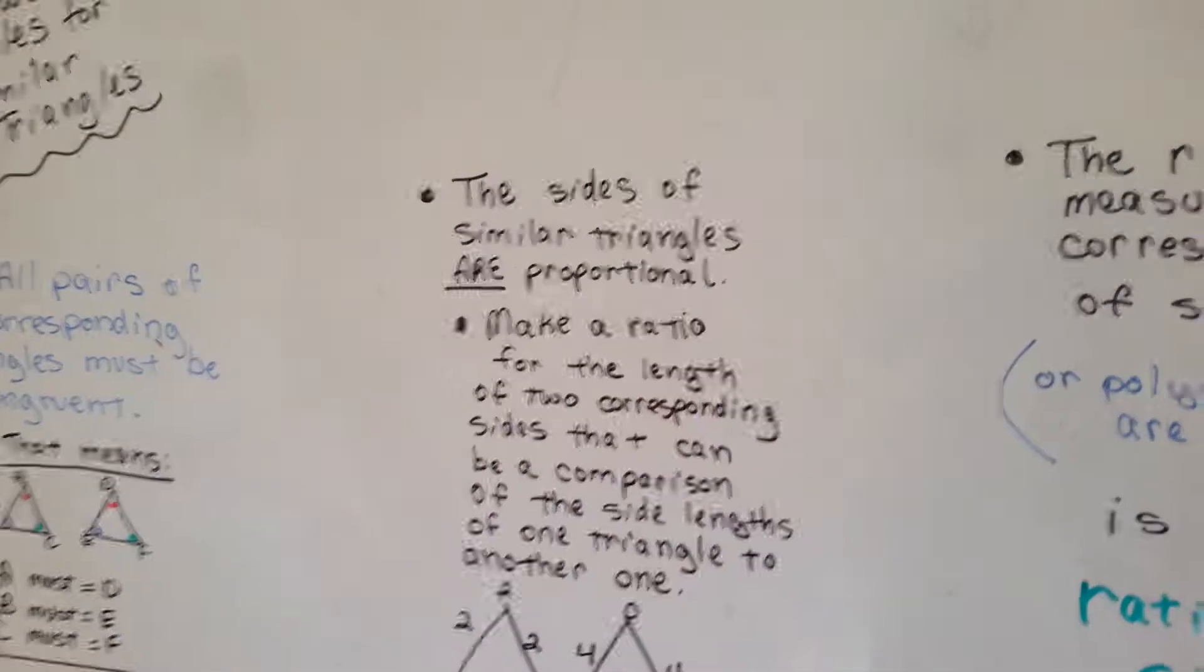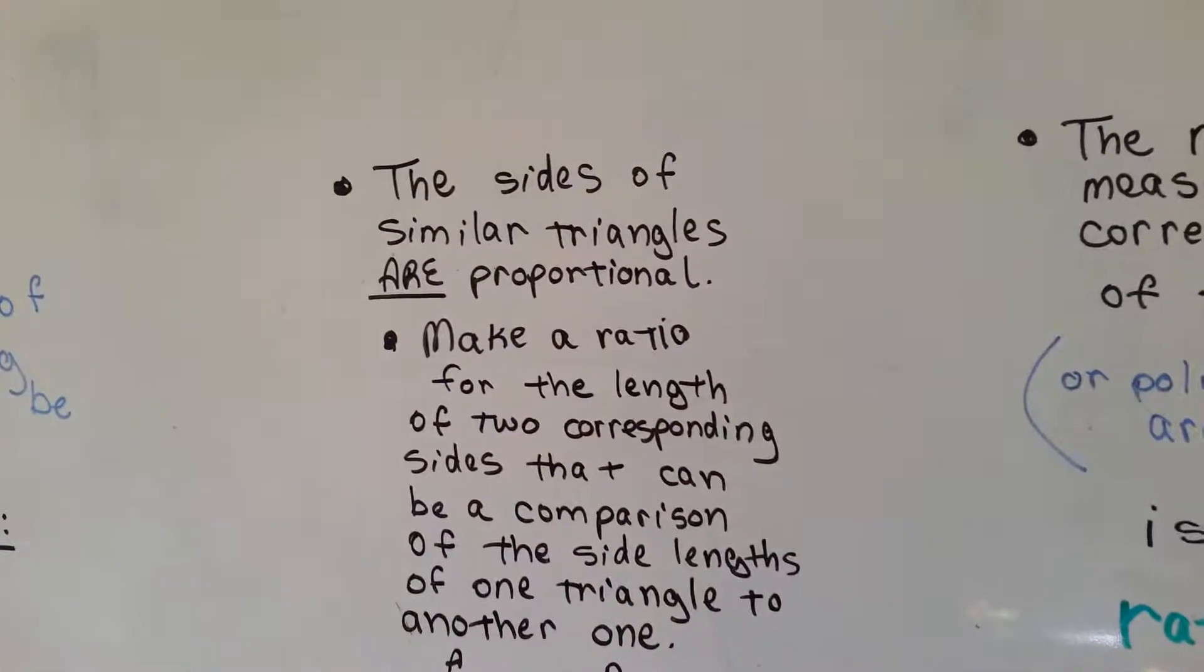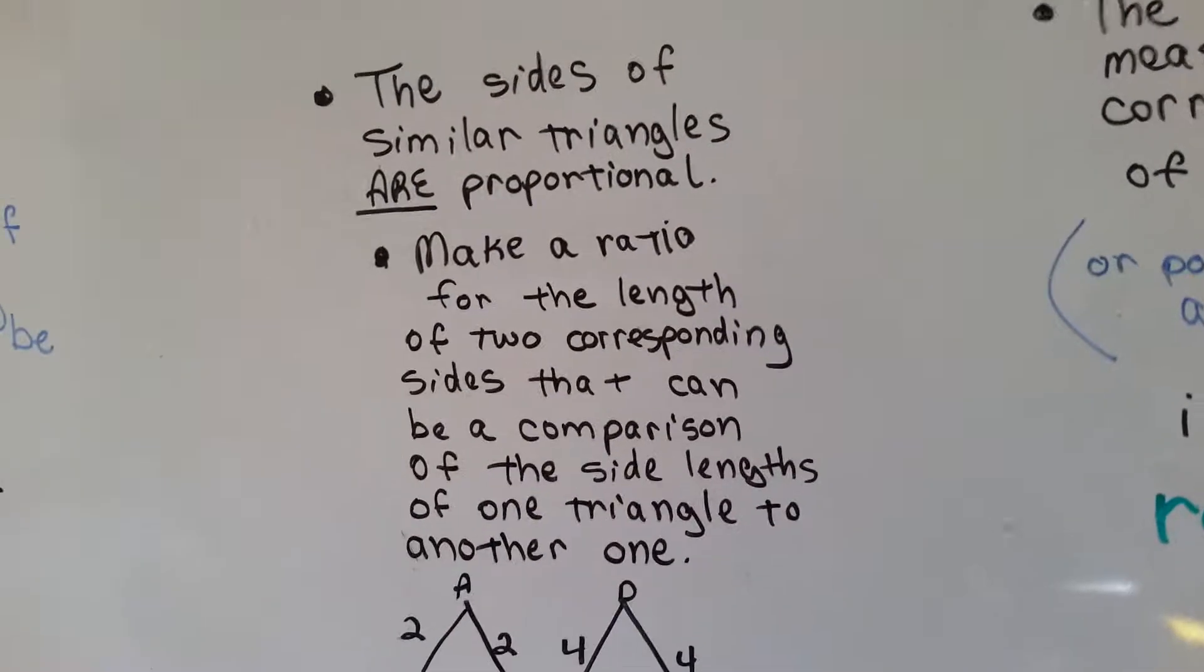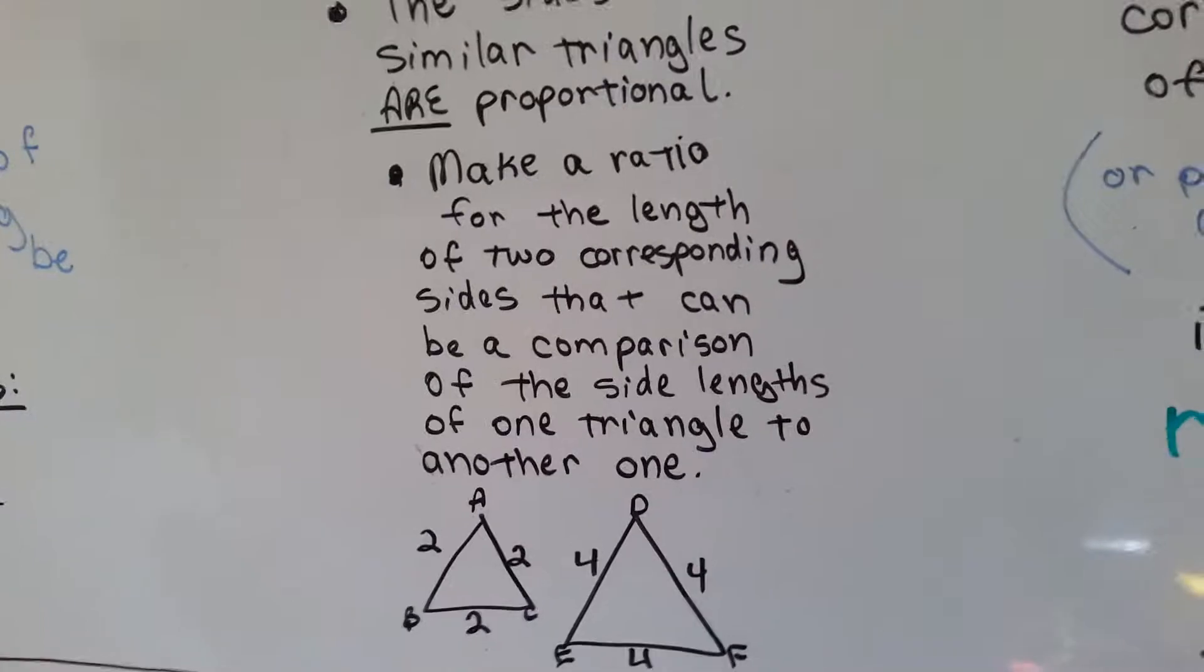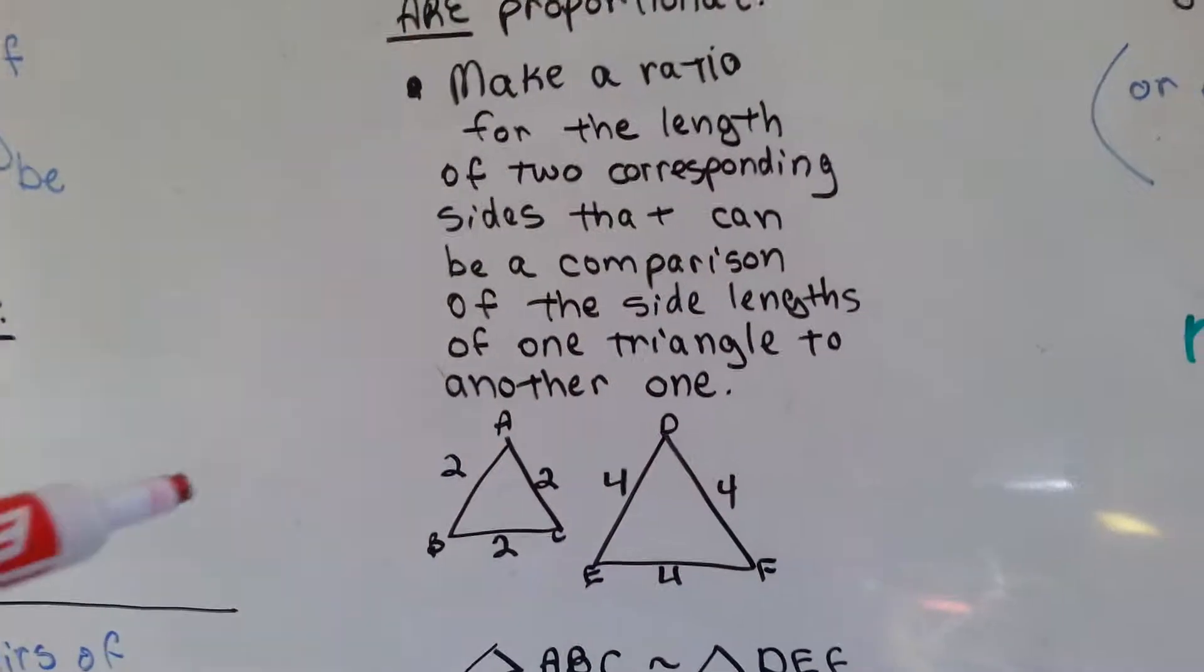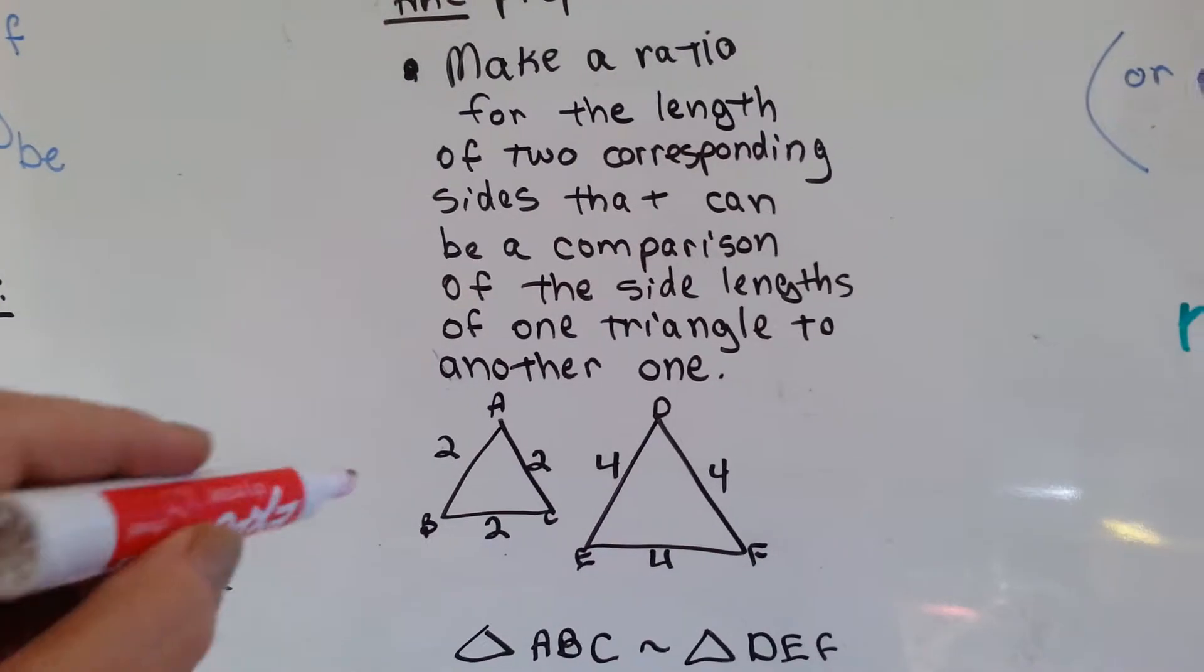So, the sides of similar triangles are proportional. They are proportional. Make a ratio for the length of two corresponding sides that can be a comparison of the side lengths of one triangle to another triangle.